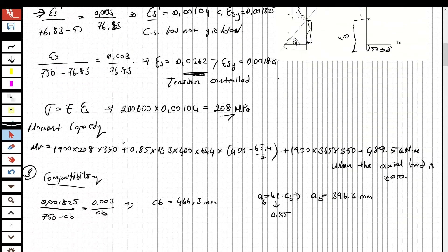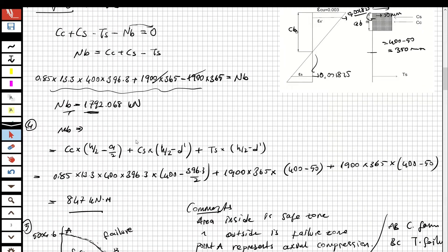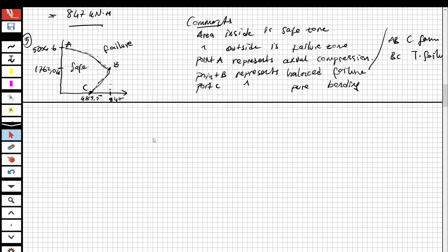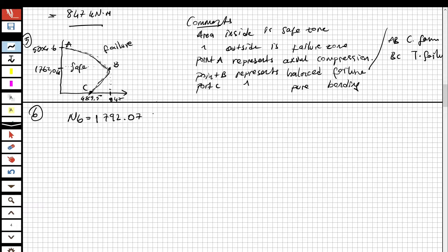Let's make a comparison between the balance actual force. The balance actual force Nb is equal to 1792.07 kN. The given design load is Nd equal to 800 kN.